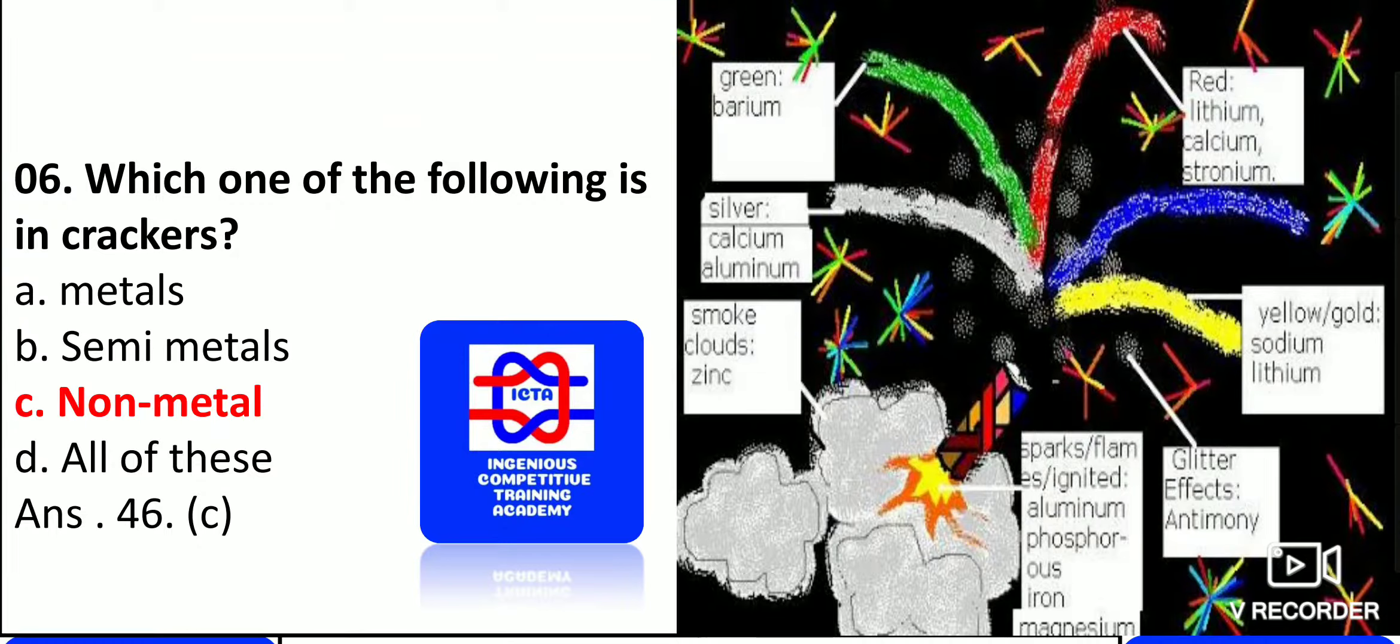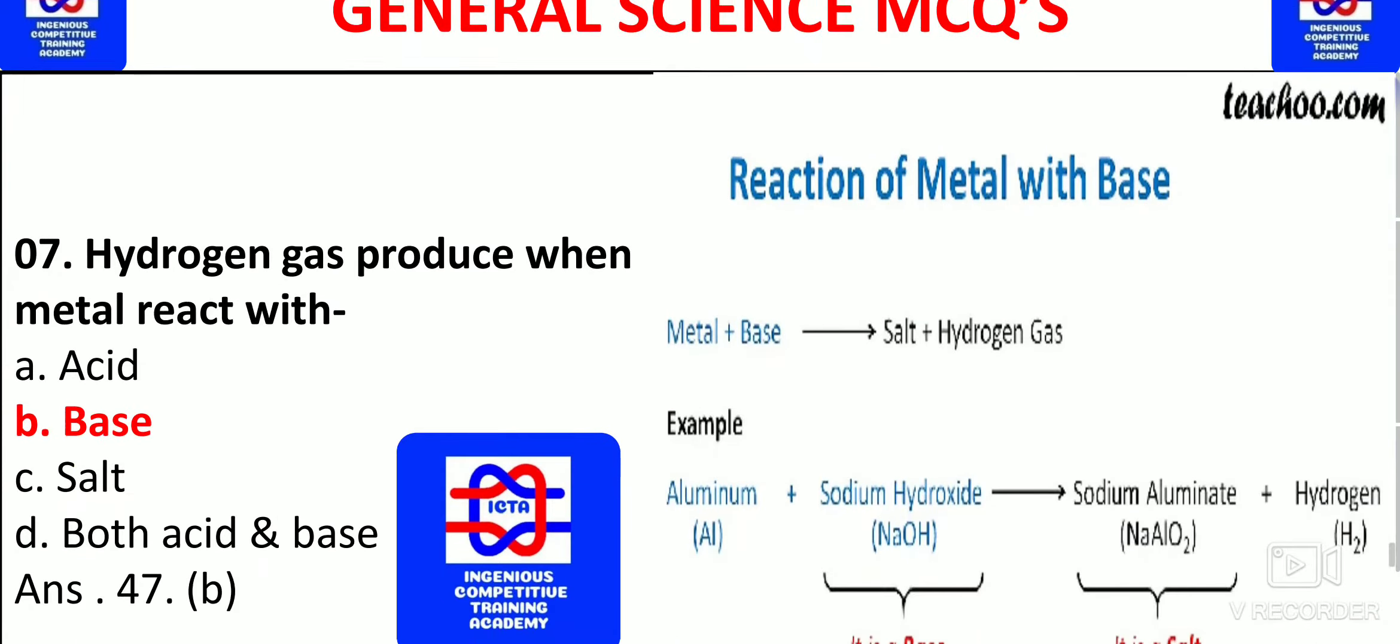Which one of the following is used in crackers? That is non-metals. As you can see, the green color of the cracker is due to barium, red because of lithium and calcium strontium. We have yellow color, that is sodium and lithium. Green color is due to barium only. Silver color is calcium and aluminum, smoke clouds is because of zinc, sparks and flame from ignited aluminum, phosphorus, iron, magnesium. These are all things which are mixed in it. So in crackers, non-metals are used. That is the reason they directly evaporate in the atmosphere.